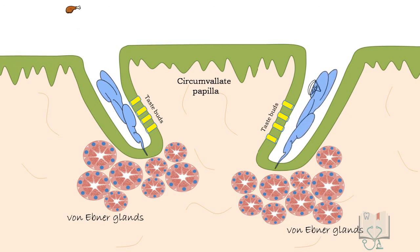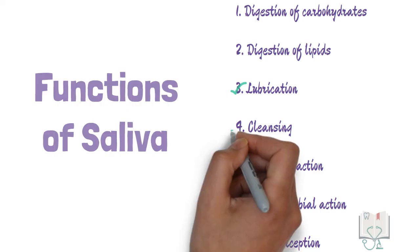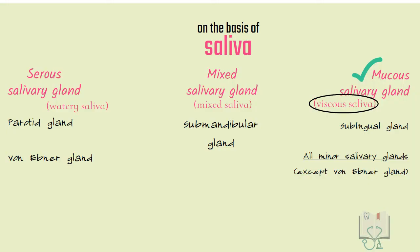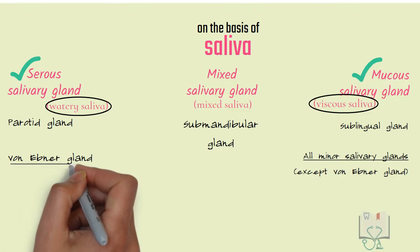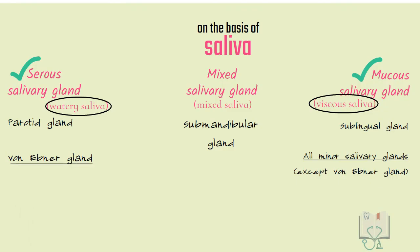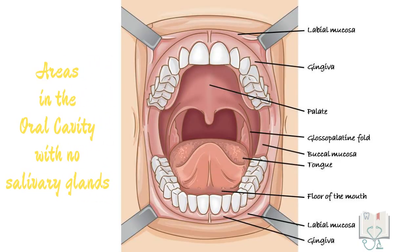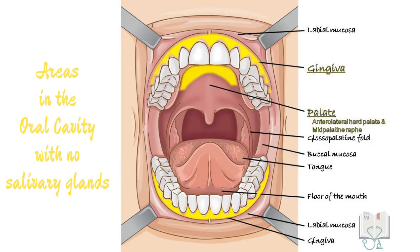After taste perception, the food particle needs to be washed away back out of the circumvallate papilla, as another important function of saliva is cleansing. This flushing is done by watery saliva released by serous glands — the von Ebner glands. In the oral cavity, there are three areas where there are no minor salivary glands: the gingiva, the anterior lateral part of the palate, and the anterior two-thirds of the dorsum of the tongue.